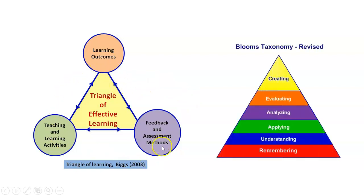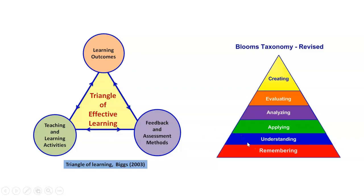In all three components of the triangle, we have to incorporate Bloom's taxonomy — the revised Bloom's taxonomy: remembering, understanding, applying, analyzing, evaluating, and creating. We have to incorporate the level of Bloom's taxonomy in the effective learning process. We fix the learning outcome at a particular Bloom's taxonomy level. For example, if I fix the learning outcome at the understanding level, I have to teach and conduct activities to make the student understand what is being taught, and at the end we measure at the same level — the understanding level, normally called K2. All three — learning outcome, teaching methodology, and feedback and assessment — must incorporate the same level of Bloom's taxonomy.